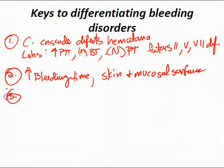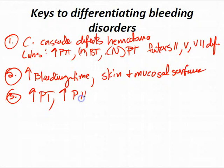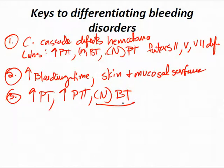Bleeding caused by vitamin K-dependent factor deficiencies — think liver disease or Coumadin therapy. You're going to have an increased PT, increased PTT, and normal bleeding time. In neonates, breast milk is vitamin K deficient and the GI tract isn't colonized yet with vitamin K-producing bacteria — that's what hemorrhagic disease of the newborn is about. That's why we give every newborn a vitamin K shot.